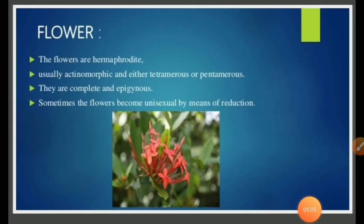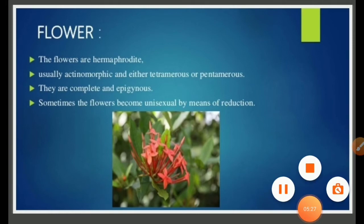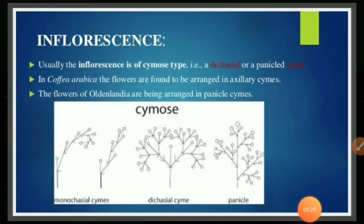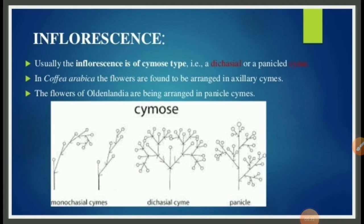Now, the flower. The flowers are hermaphrodite, bisexual, usually actinomorphic, either tetramerous or pentamerous. They are complete and epigynous. Sometimes the flowers become unisexual by means of reduction. Inflorescence: mostly the family shows polychasial type of inflorescence, which is a cymose type of inflorescence.